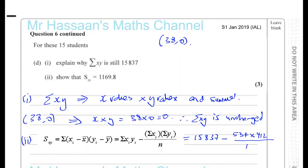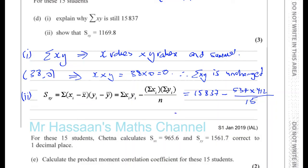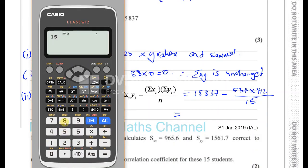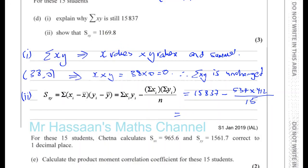So if we calculate that, you've got 15837 minus 534 times 412 divided by 15. And that gives you 116.98, which is exactly what we had to show. So we're on the right tracks there.